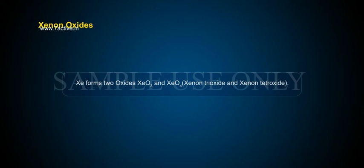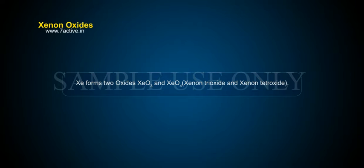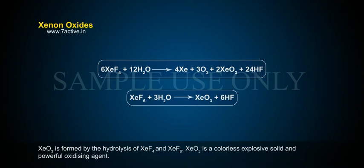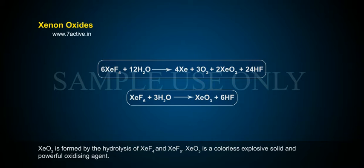Xenon forms two oxides: XeO3 and XeO4, known as Xenon trioxide and Xenon tetroxide. Xenon trioxide is formed by hydrolysis of XeF4 and XeF6. XeO3 is a colorless explosive solid and a powerful oxidizing agent.